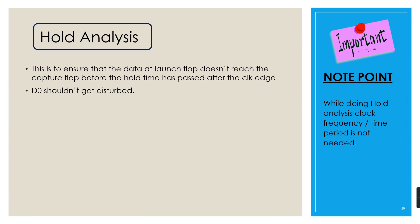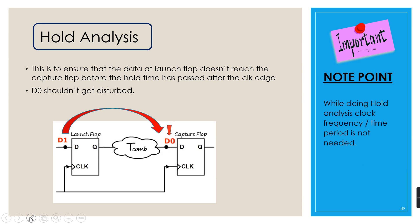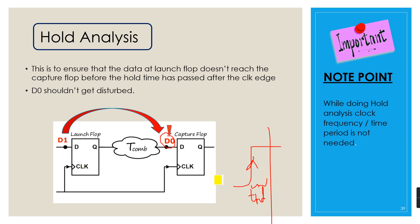Now let us look at what hold analysis is. In hold analysis, our main objective is to make sure that on the rising edge of the clock, the data launched by the launch flop should not reach and become stable at the input of the capture flop before the hold time has passed after the active edge. One important point is that in hold analysis, we are not concerned about the clock period or clock frequency, because we are dealing with both flip-flops with respect to the same active edge of the clock.